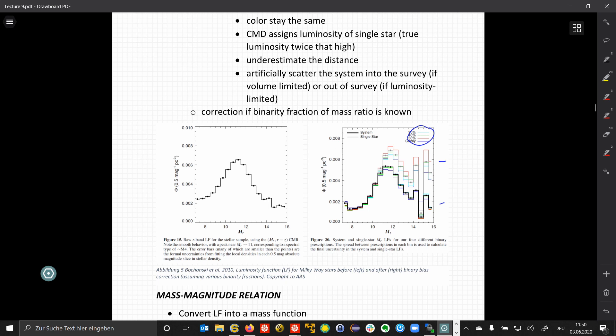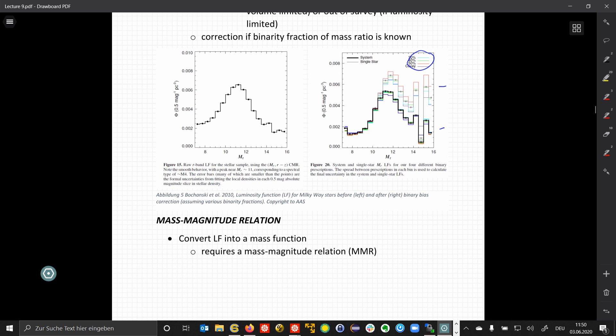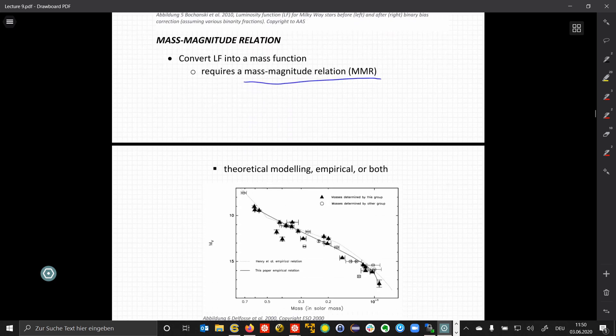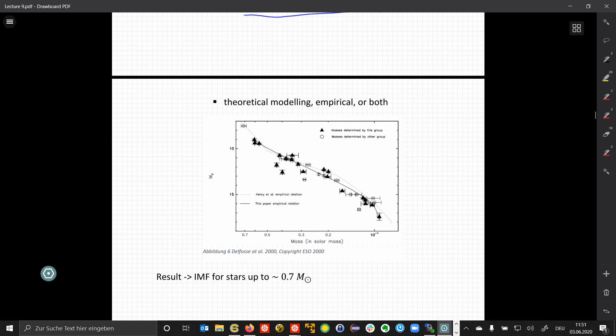So, once we have determined the absolute magnitude, we need to figure out the mass of the stars, and this is done by a mass-magnitude relation. So, we need to convert our luminosity function into a mass function, which requires a mass-magnitude relation. This can be either done by theoretical modeling, or empirically in stars where we can determine the mass independently, or by both. And here's an example of such a mass-magnitude relation, published by Delfosse and others in 2000, where we have the mass in solar masses here on the x-axis, and the absolute magnitude on the y-axis. Doing this gives us an IMF for stars up to masses of 0.7 solar masses.